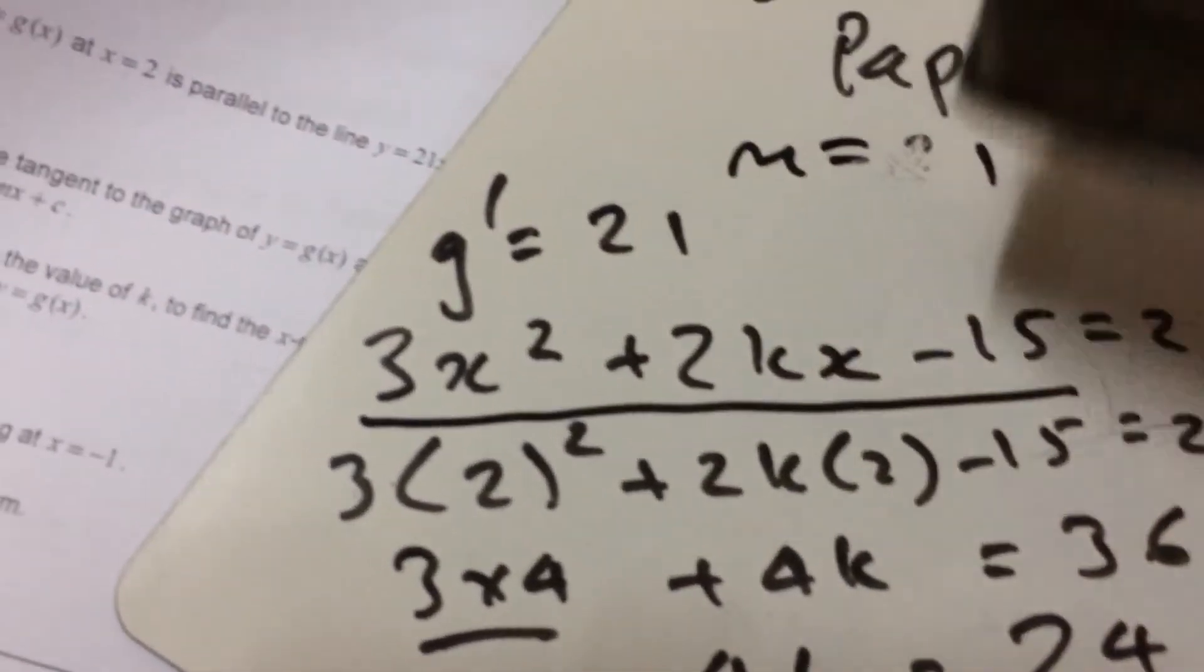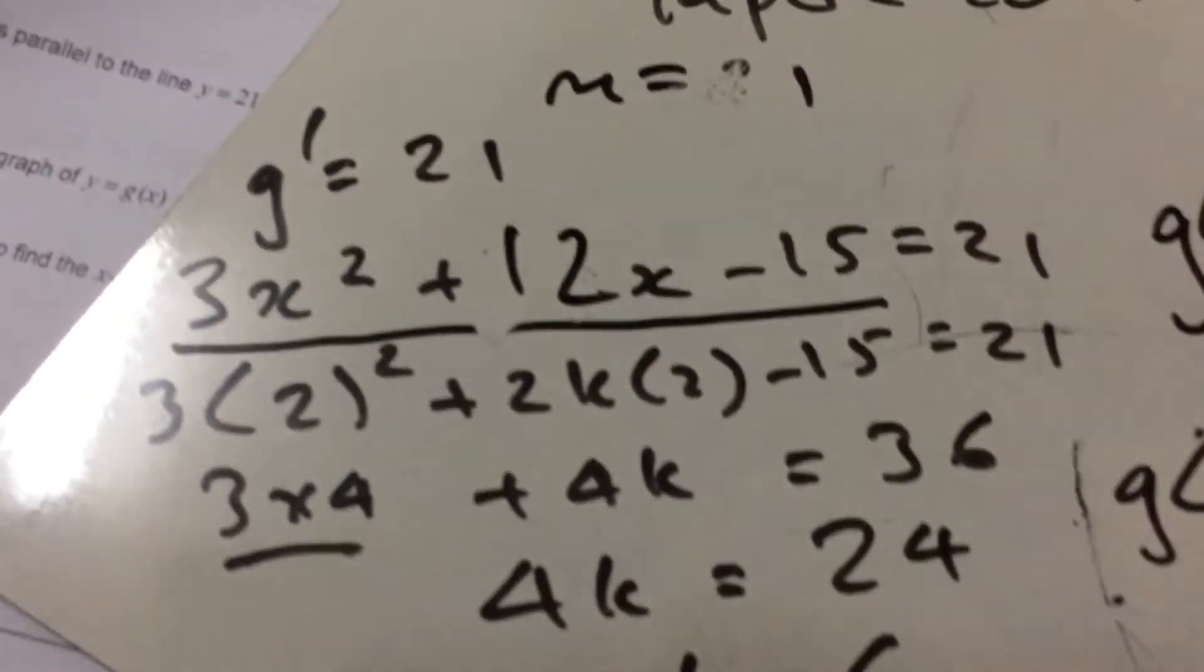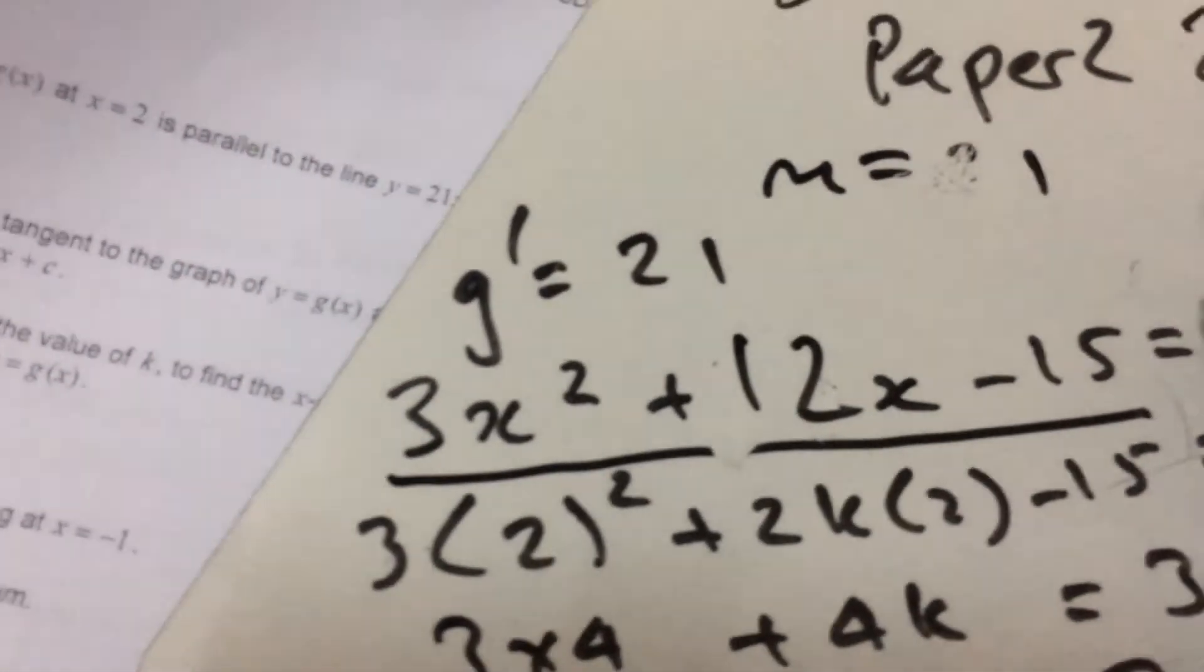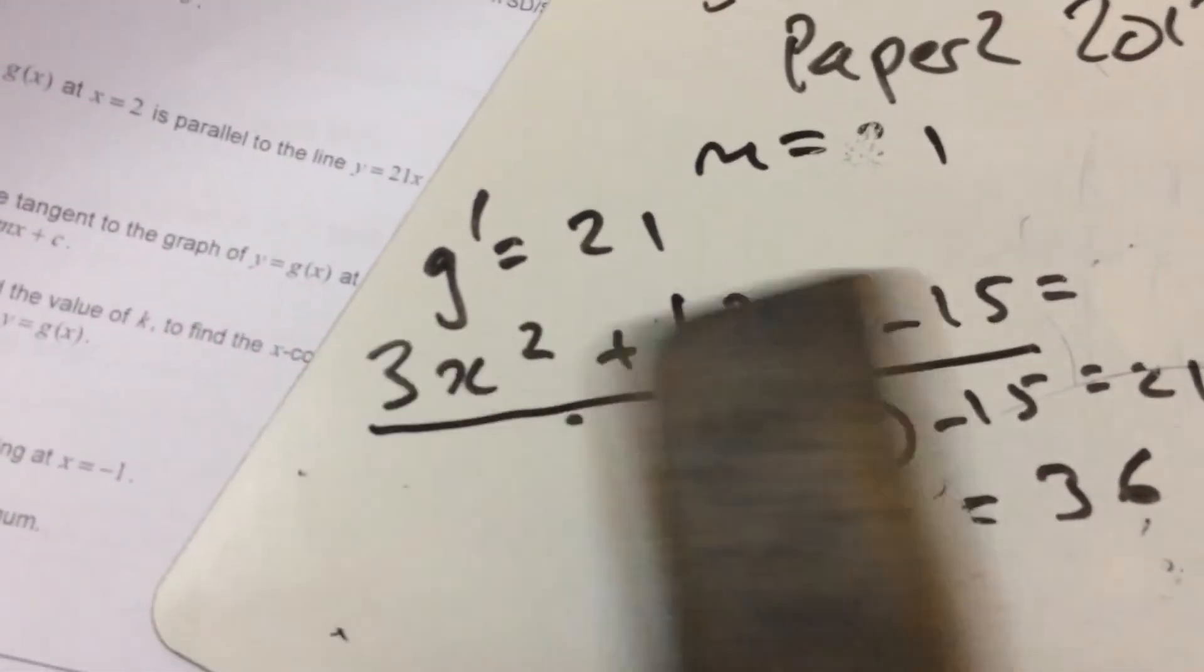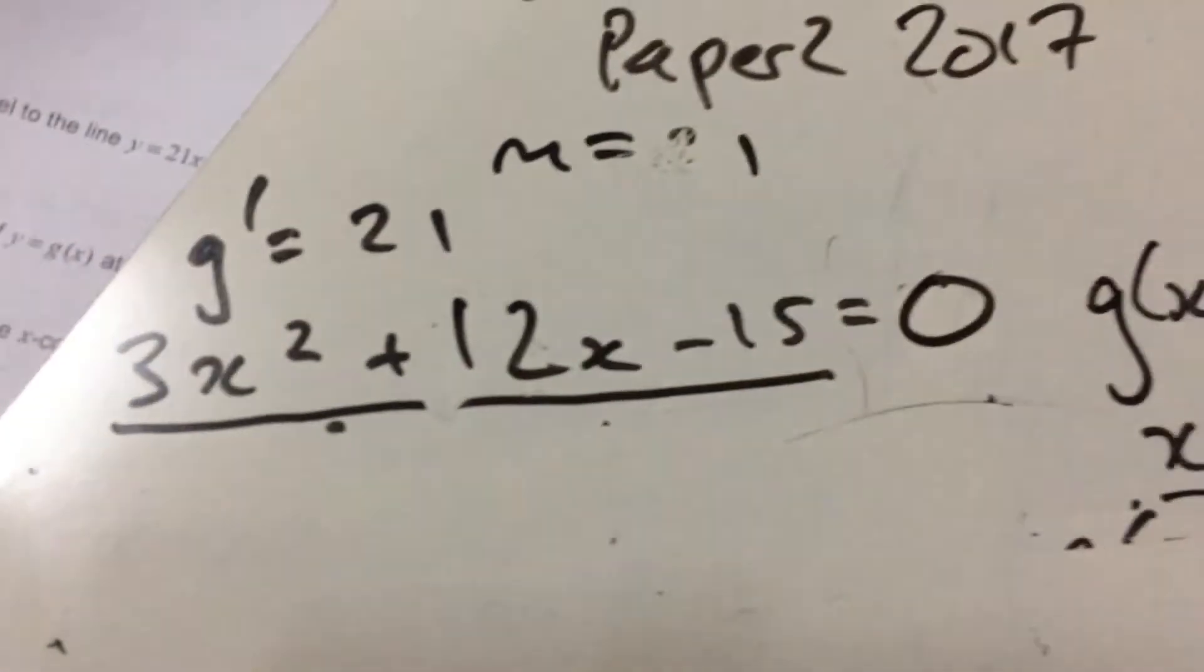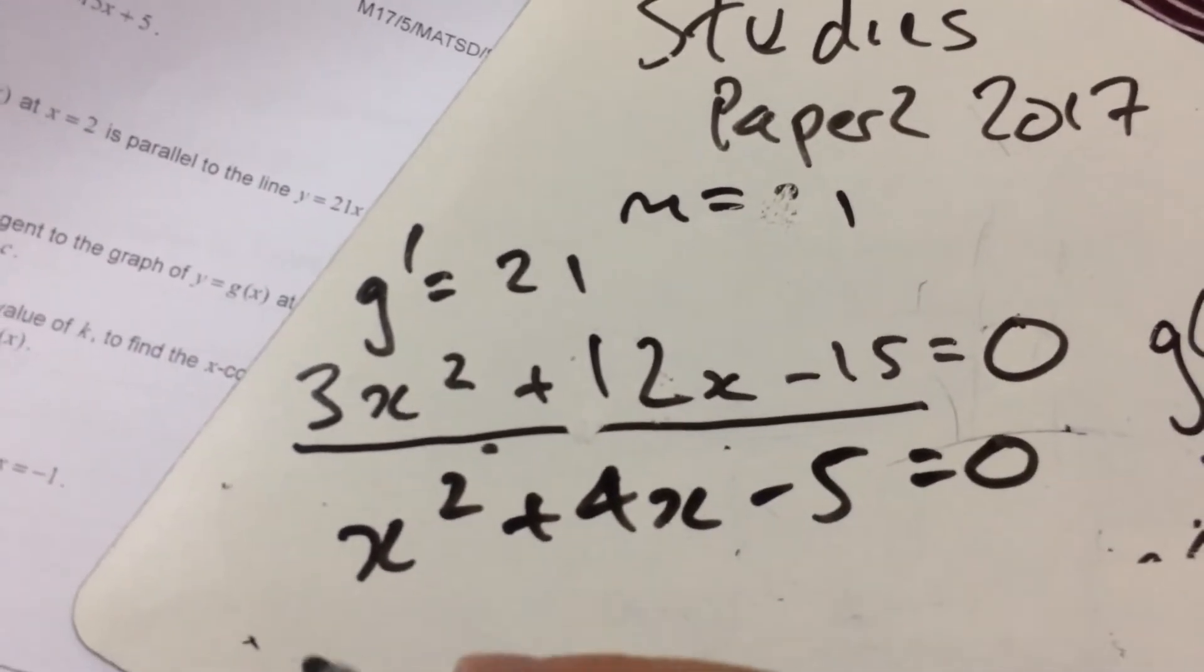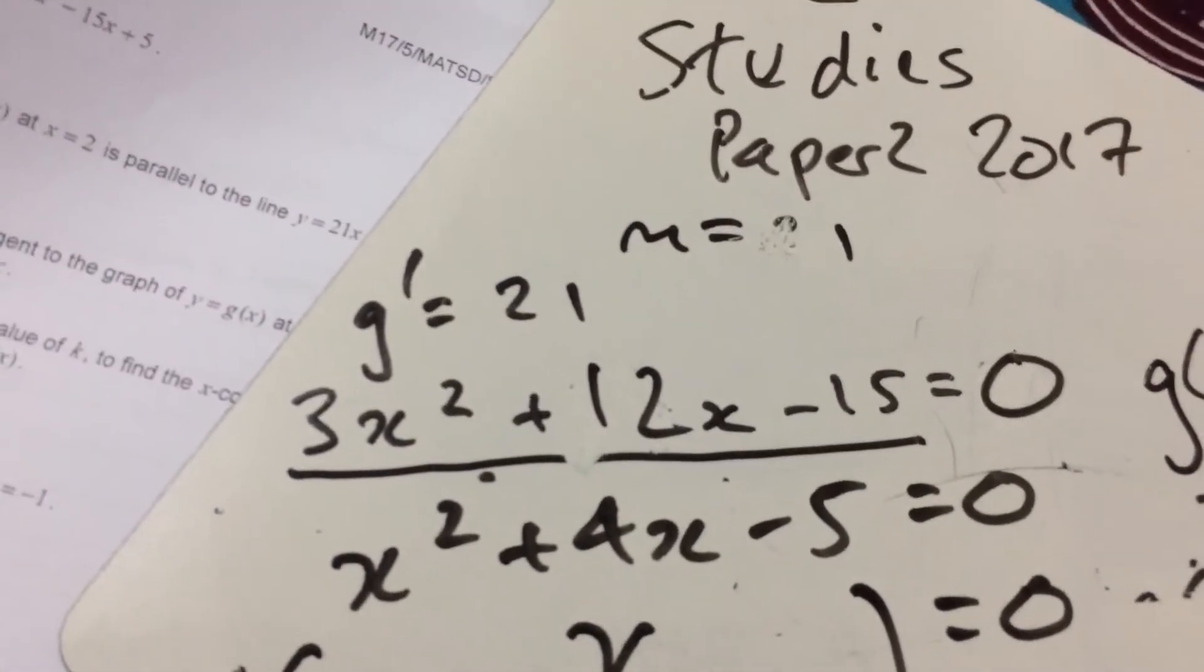But, we now know that that k was 6, so it's going to be 12x. So, we've got to put 3x² + 12x - 15 = 0. So, I'm going to just get rid of all that that I had before. Okay, and remember that stationary points must equal 0. Divide through by 3: x² + 4x - 5 = 0. We should be able to factorize this.